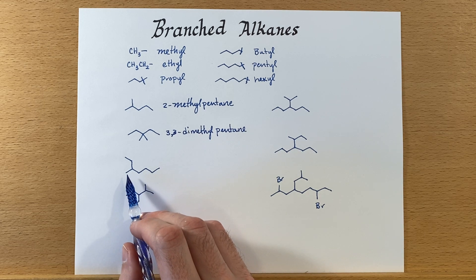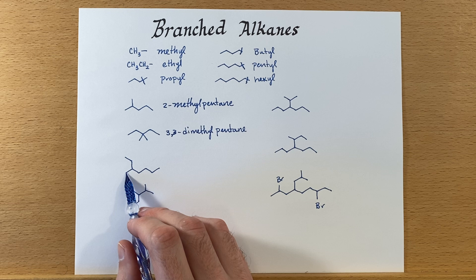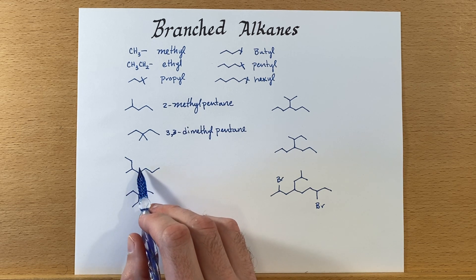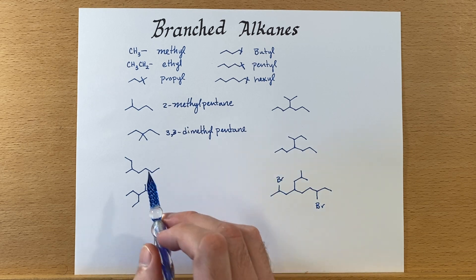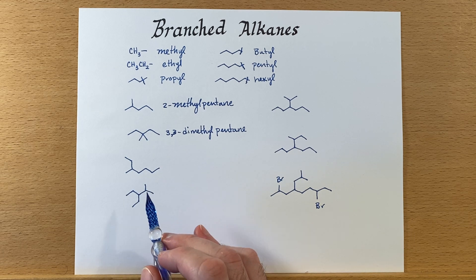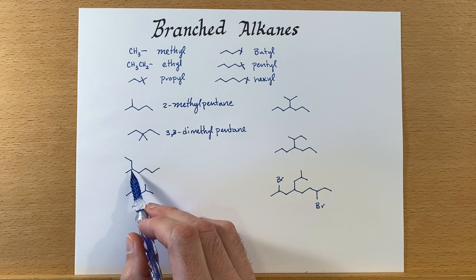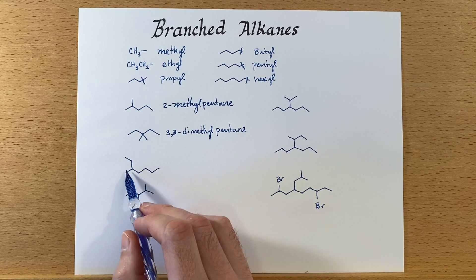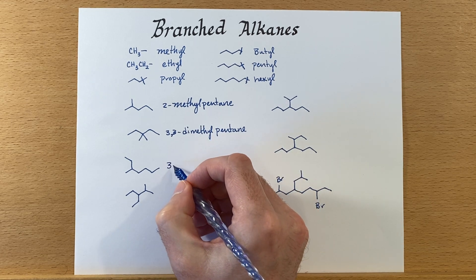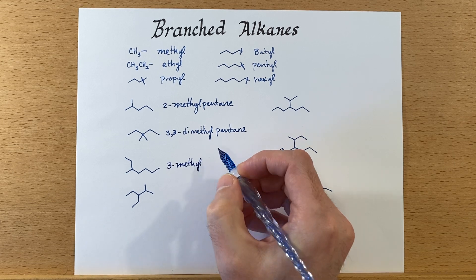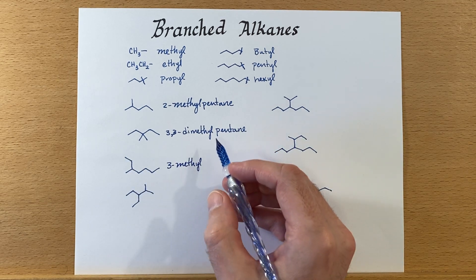Now let's count this next one. It looks like we might have an ethyl group on this chain. Counting one way: one, two, three, four, five, six — that's six carbons. But let's check the other way: one, two, three, four, five, six, seven. It's not a hexane, it's a heptane. This is sometimes a little tricky depending on how it's drawn. So instead of this being an ethyl group on carbon two, it's actually a methyl group on carbon three. This is 3-methylheptane, because seven is the longest chain.